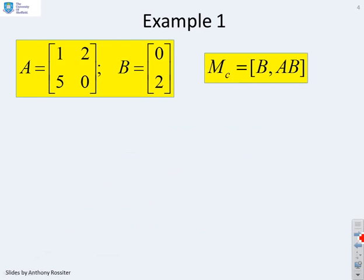First example, then. You're given the matrices A and B, and we want to know, is this system controllable? And as we've said, all we're going to do is use the controllability matrix. So here, I've already got B, so my first step is to calculate AB.